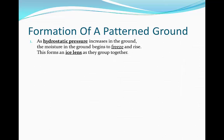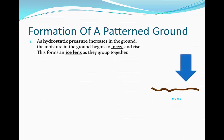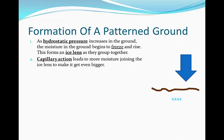As hydrostatic pressure increases in the ground, the moisture in the ground begins to freeze and as a result is going to rise. This forms an ice lens, which is the group of frozen moisture in the soil. They begin to group together, and all the moisture begins to freeze and forms an ice lens. Capillary action then leads to more moisture joining the ice lens, making it even bigger. Capillary action is basically when moisture moves through the soil and joins the ice lens.